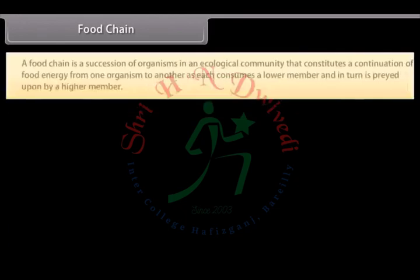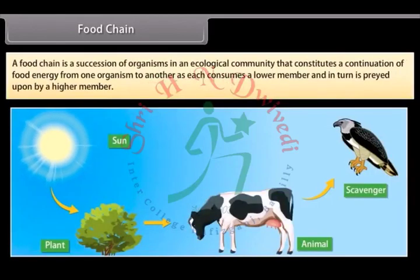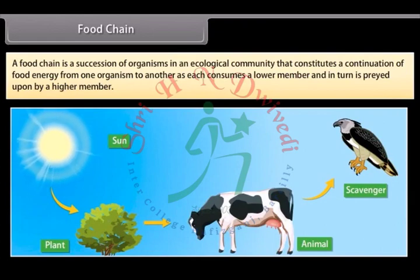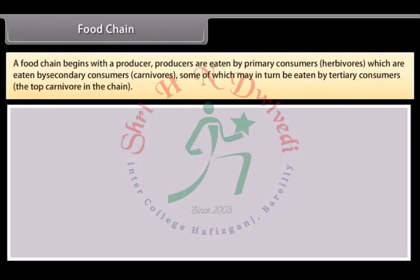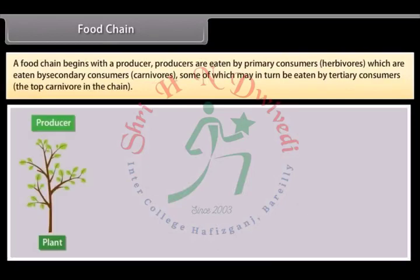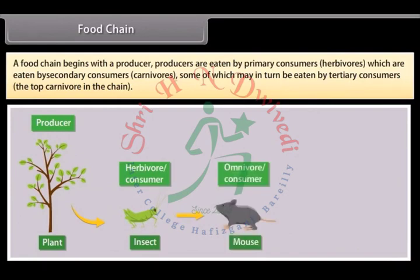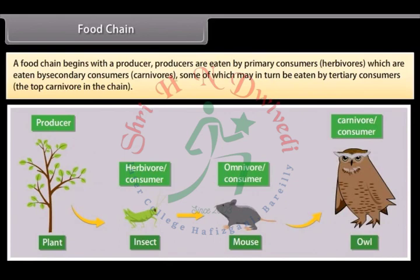A food chain is a succession of organisms in an ecological community that constitutes a transfer of food energy from one organism to another, as each consumes a lower member and in turn is preyed upon by a higher member. A food chain begins with a producer. Producers are eaten by primary consumers (herbivores), which are eaten by secondary consumers (carnivores), some of which may in turn be eaten by tertiary consumers — the top carnivore in the chain.